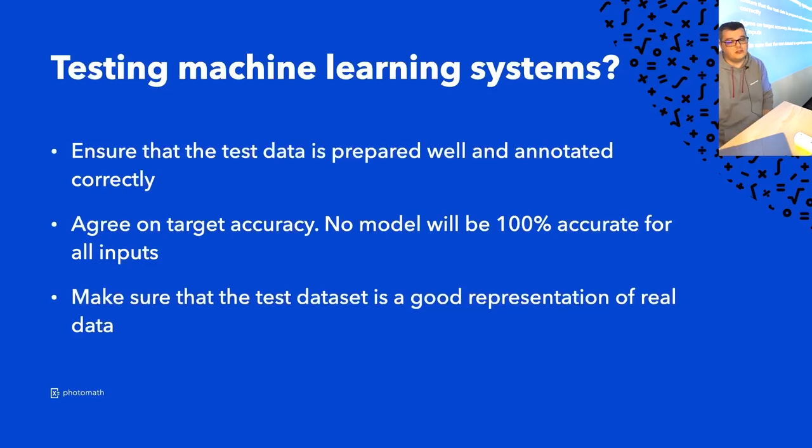You need to agree with everybody that's working on it and the stakeholders on the target accuracy. So models work with accuracy and no model will ever be a hundred percent accurate for all possible inputs. So you need to agree what the acceptable limit is for your model in your product that you want to reach. And everything above that is then a positive benefit. But if it's reached, that means the testing is successful. But you will still have some issues in production because as I said, they're not a hundred percent guaranteed to work.